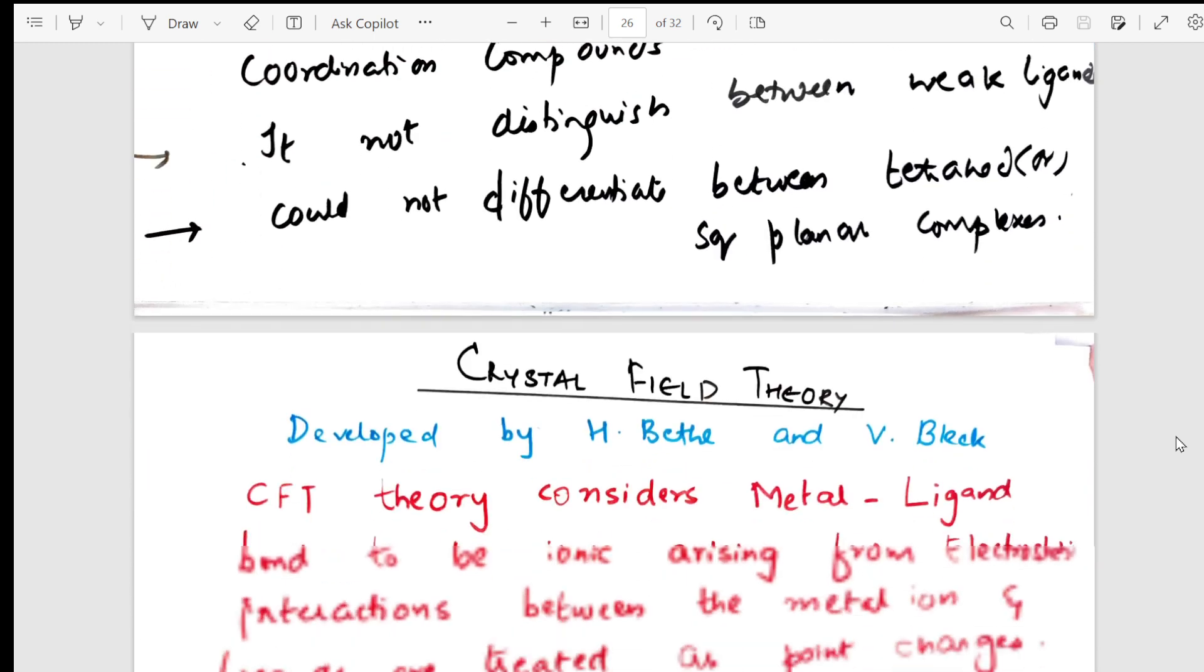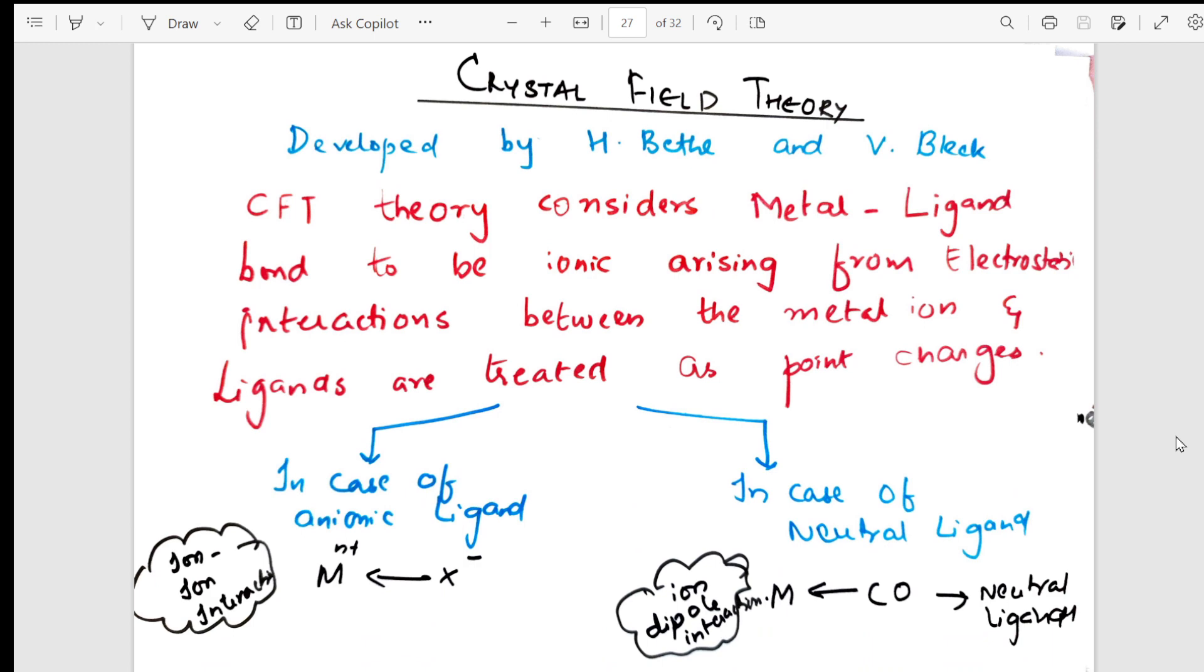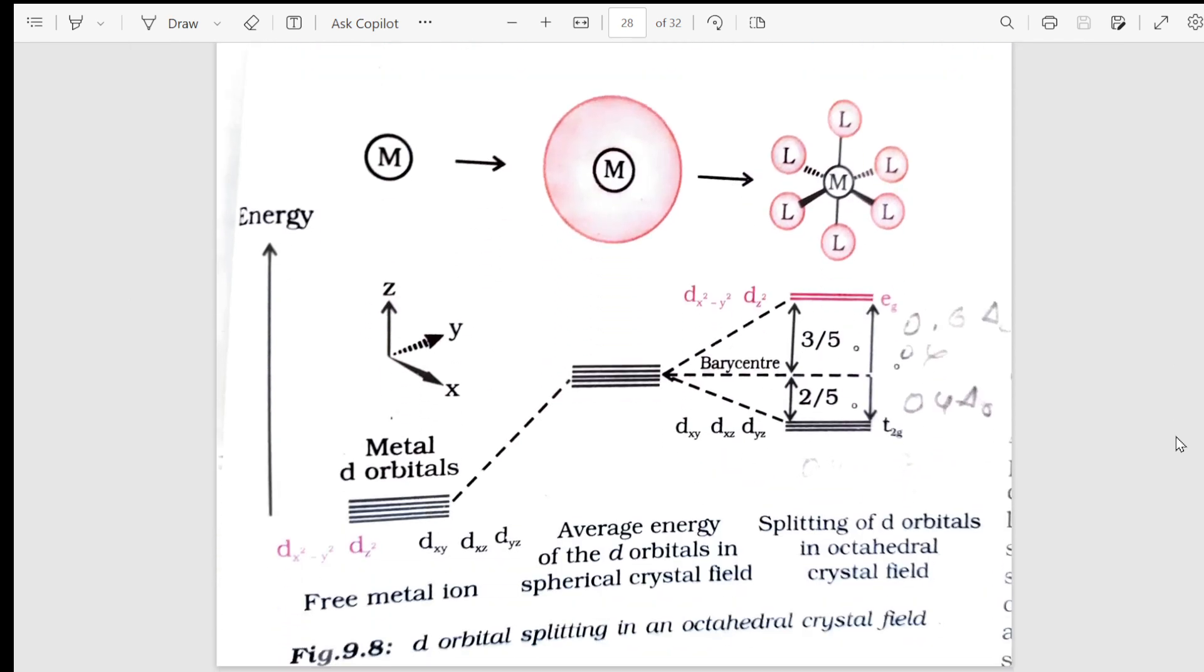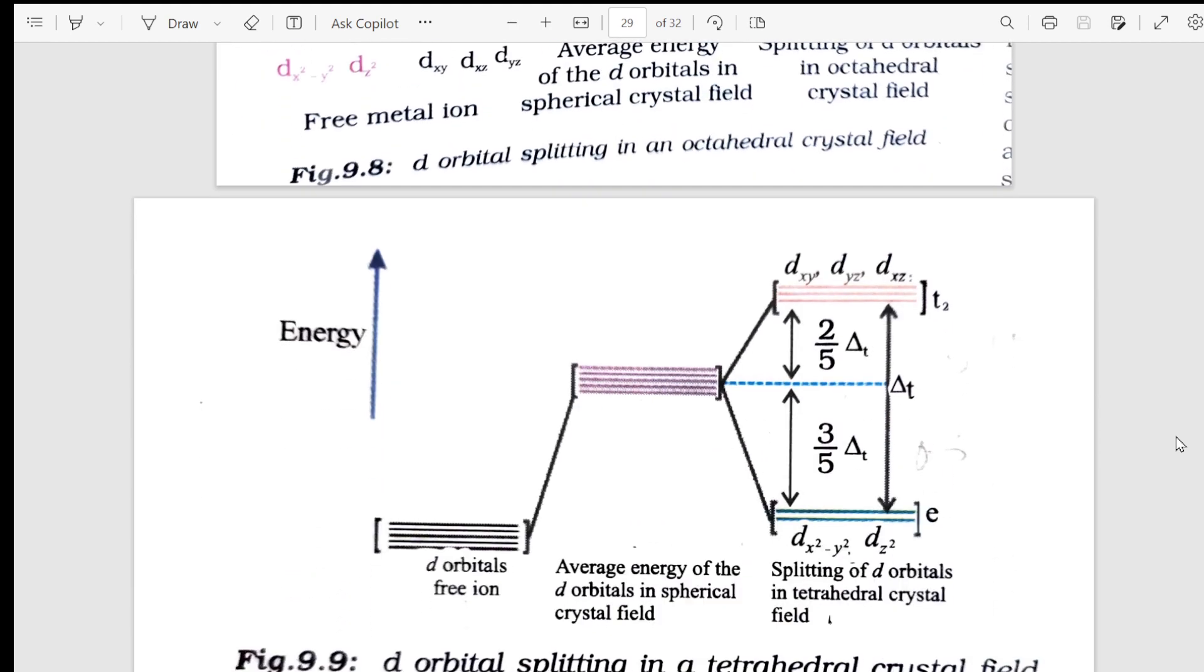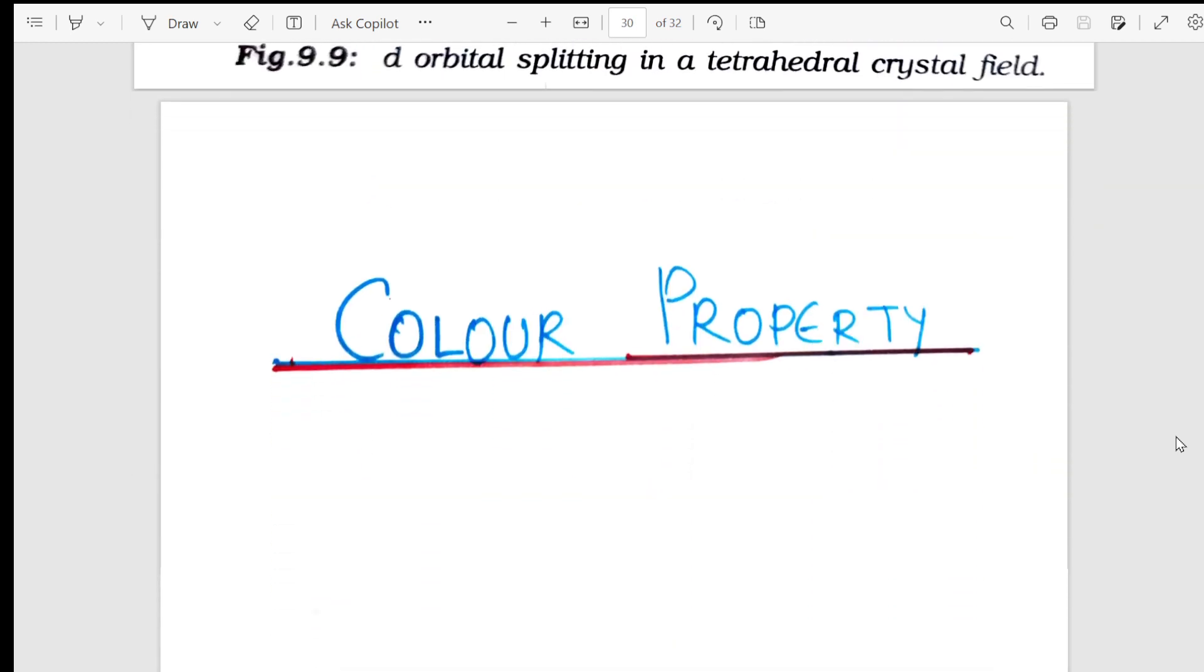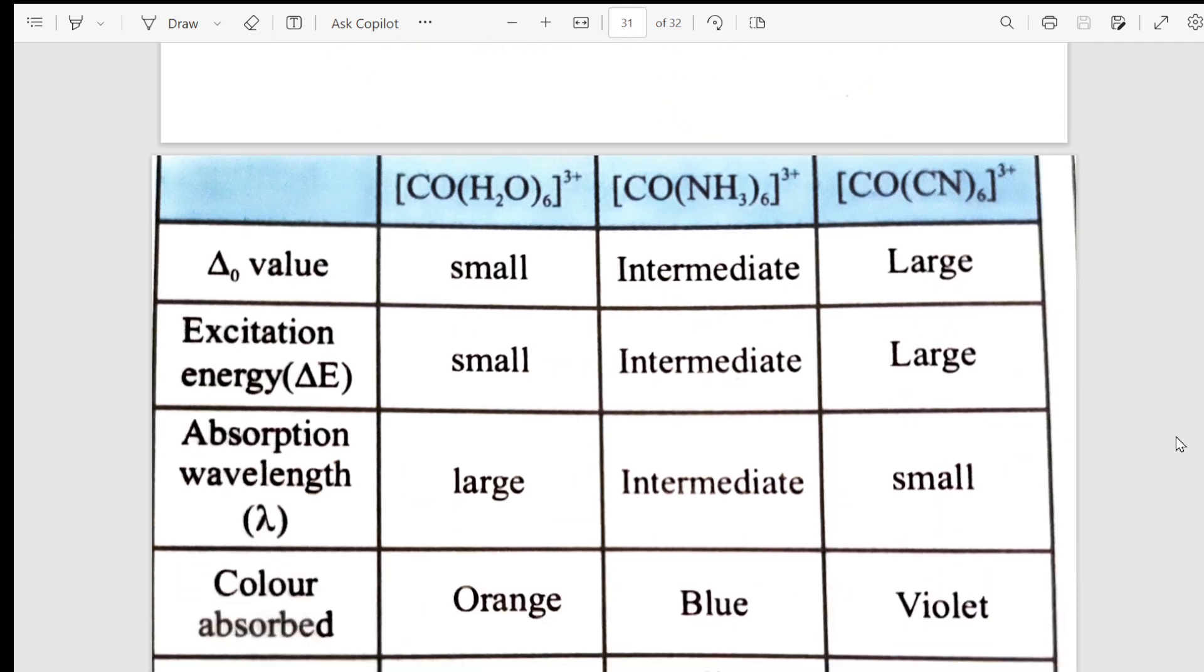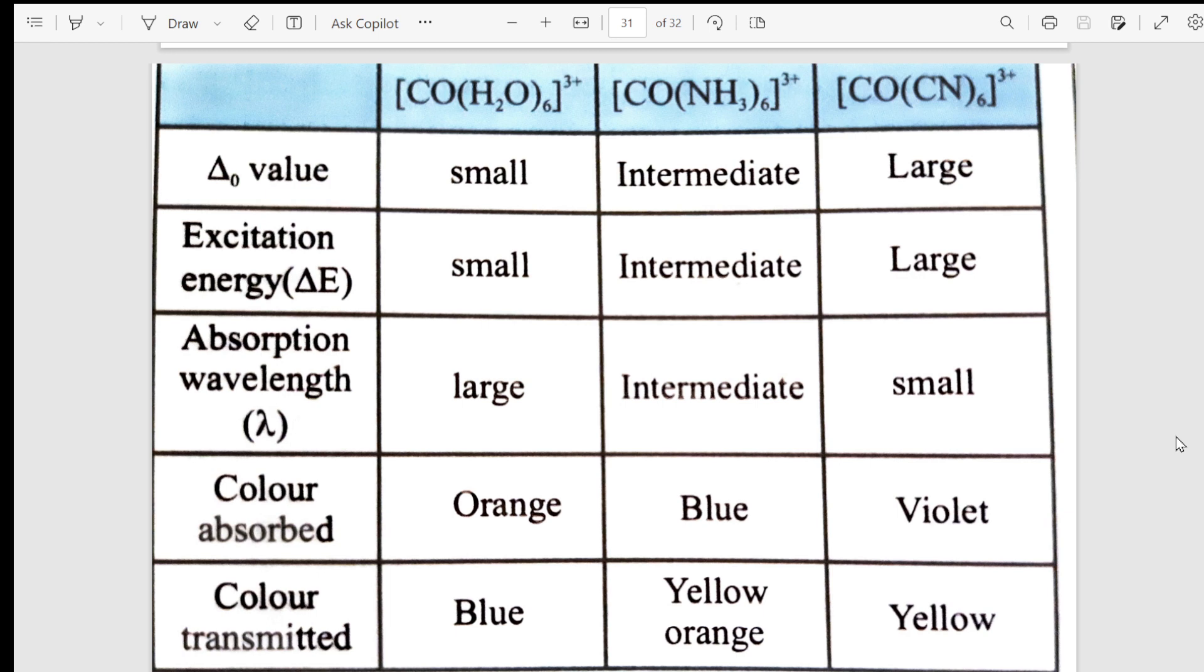After VBT I've taken into crystal field splitting - who has developed it, what are the different postulates. After this I have shown you how the splitting happens in octahedral as well as your tetrahedral complexes. From there I went into a concept called color property, that color property, what actually is crystal field stabilization energy for each complex, why it is, what is the difference in everything.